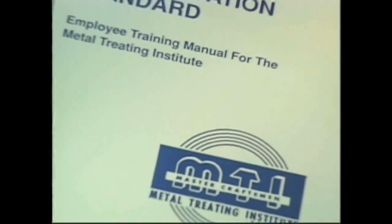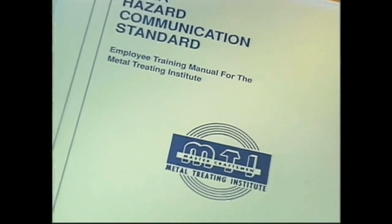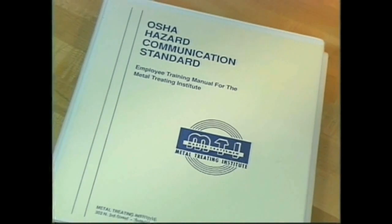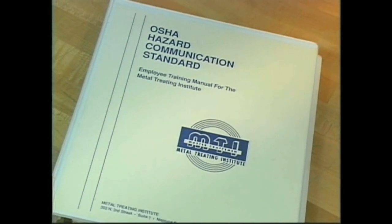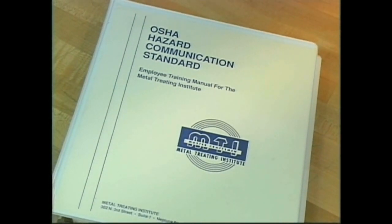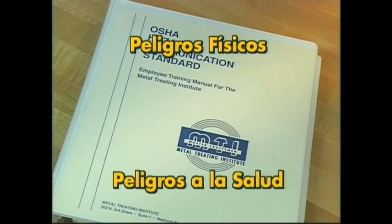Según la norma de comunicación de peligros de la OSHA, un químico peligroso se define así: un material que plantea un peligro físico o a la salud.